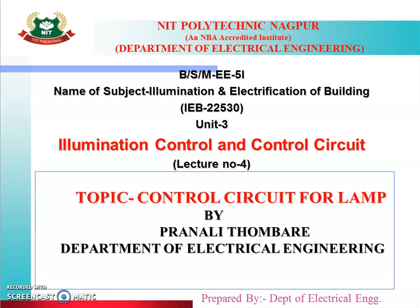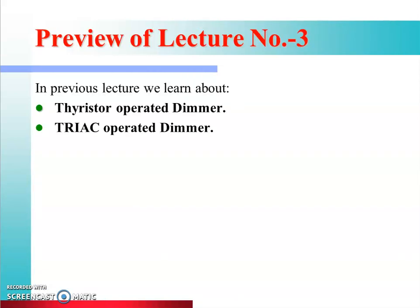Hello everyone and welcome to this online lecture series on illumination and electrification of building. We have started unit number 3, that is illumination control and control circuit. Today is lecture number 4 and we will be discussing about control circuit for lamp. In the previous lecture we learned about thyristor operated dimmer and triac operated dimmer, which both come under the category of electronic dimmer.